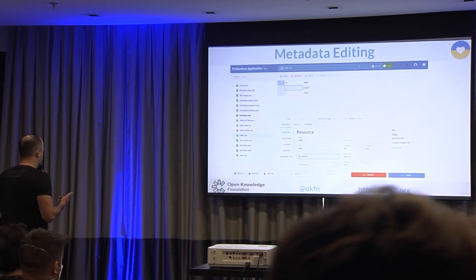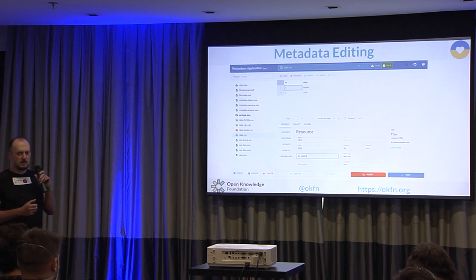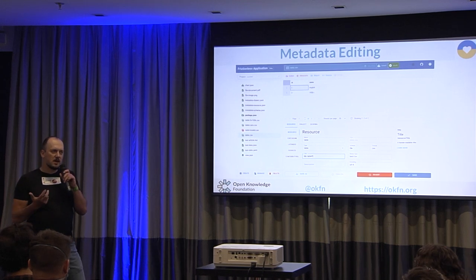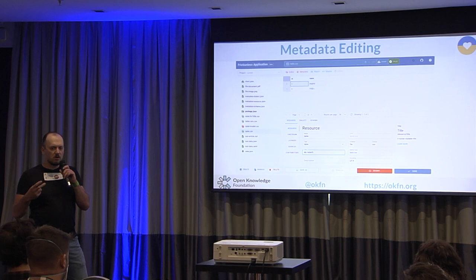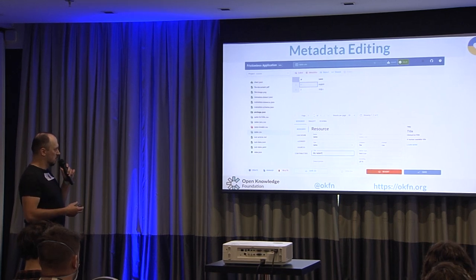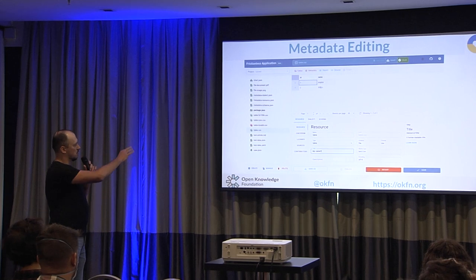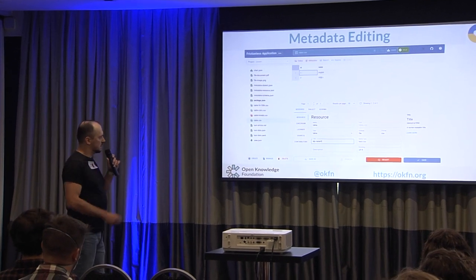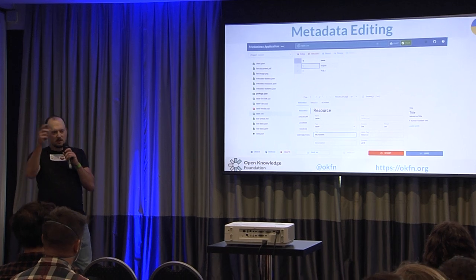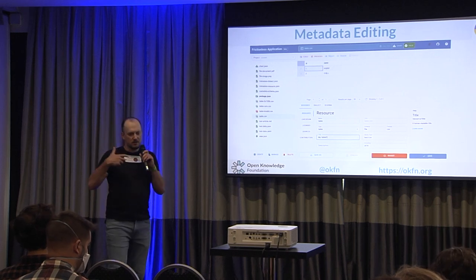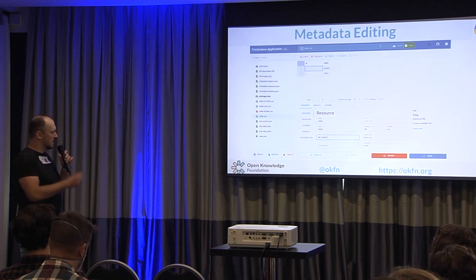The second powerful thing of Frictionless is metadata. Frictionless is based on the Frictionless Standards — a metadata standard for describing data, basically a data description language for tabular and other types of data. In the application, it infers metadata for you — for normal files it gives information about format and type, and for tabular ones it also gives schema data types. You can edit this and save.